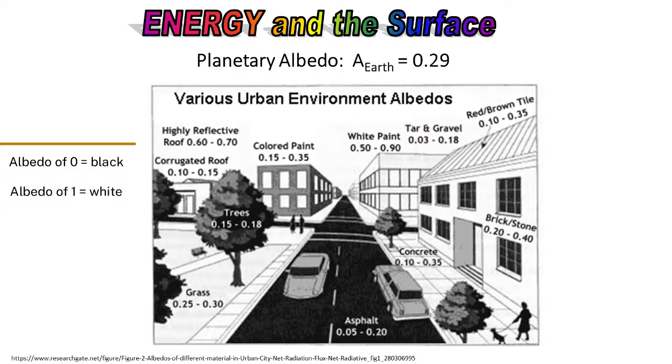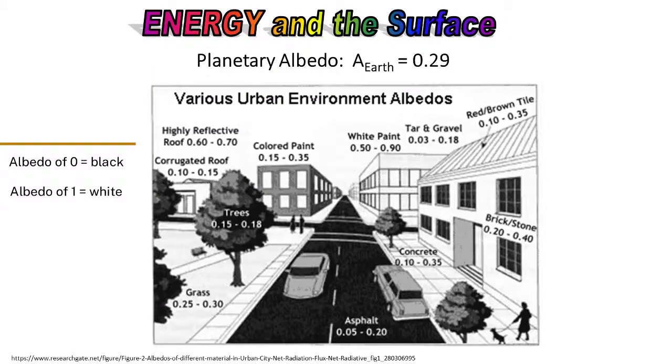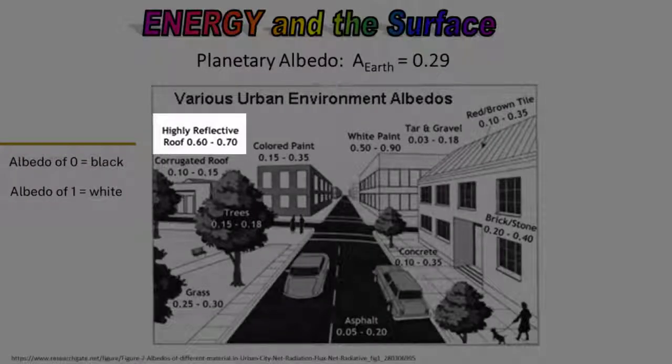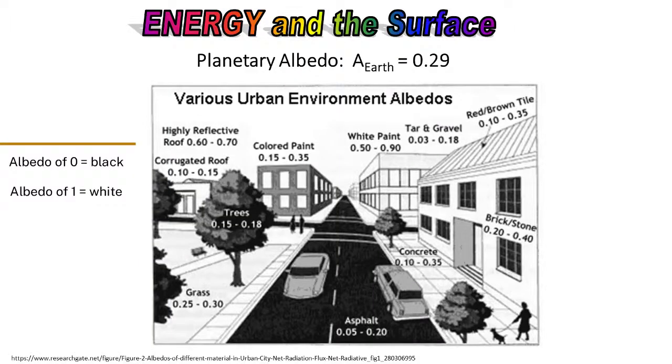In contrast, white paint can have a reflectivity of 0.9, and a highly reflective roof can have a reflectivity of 0.7, so we do have the technology to create highly reflective surfaces. However, reflecting the shortwave or longwave radiation back into the atmosphere doesn't necessarily mean we've gotten rid of it, because once it's back in the atmosphere it can be absorbed, reflected, and so forth by particles, gases, clouds — clouds of course being water vapor particles.